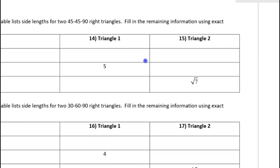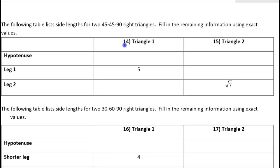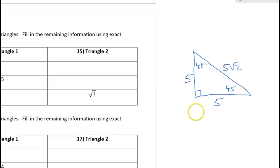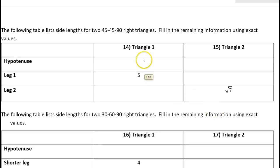For problem number 14, we are given that one of the legs is five and we're supposed to find the rest. So if one leg is five, that means the other leg is five and the hypotenuse will be five radical two.